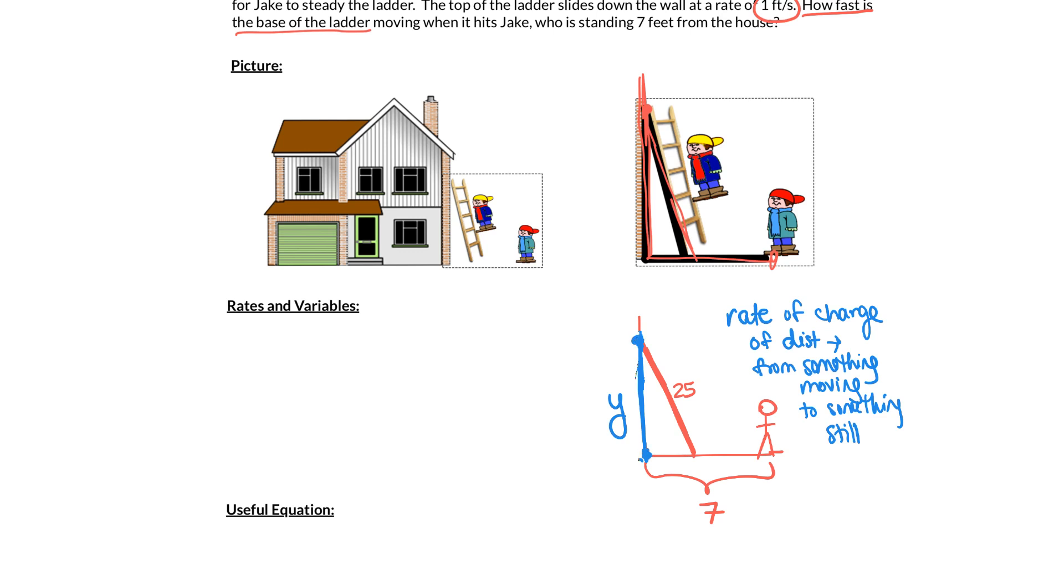And then the other thing that's changing that we're probably going to care about is the distance at the bottom of the ladder. We want to know how fast the bottom of the ladder is when it hits Jake. And so again, we need to measure the distance from the bottom of the ladder to something that's not moving. So we might as well use this same point over here, the house, where the house meets the ground. And we'll call that distance x since it's horizontal.